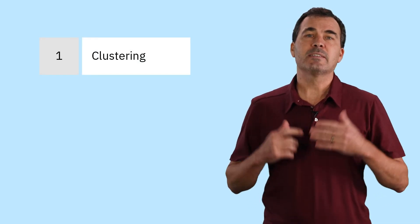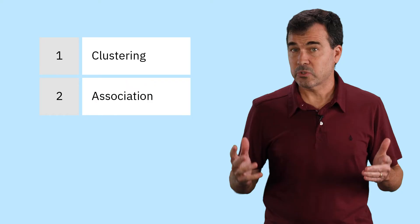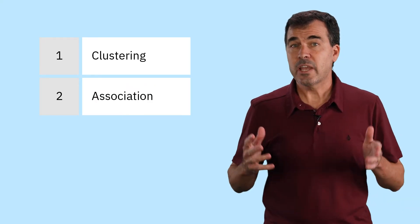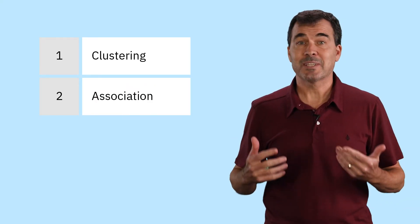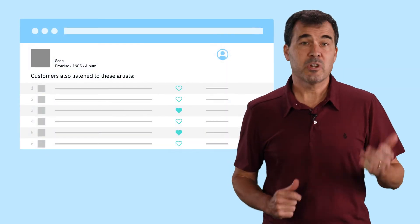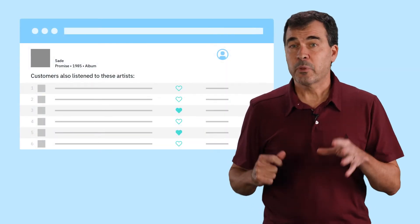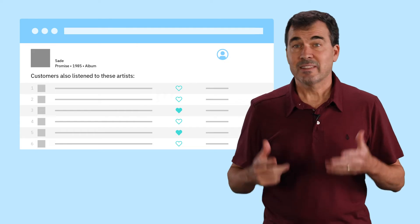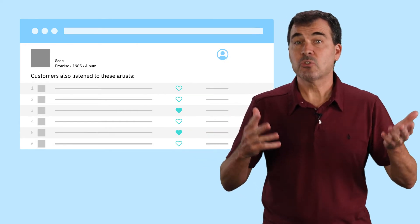The next type of unsupervised machine learning is called association. Association is used to identify relationships in the data. Picture your music streaming playlist. When your platform pops up a message, listeners who liked X also liked Y, that's association.